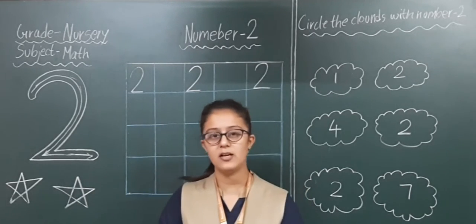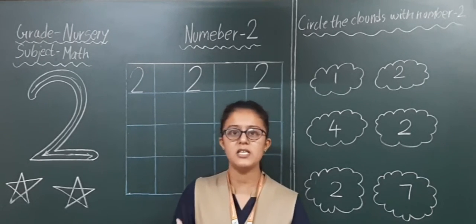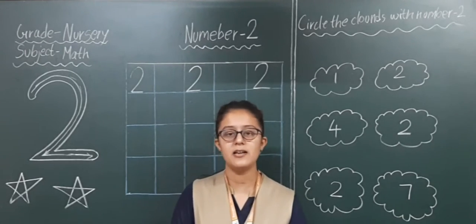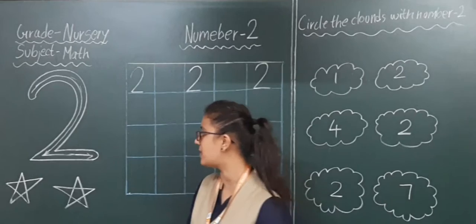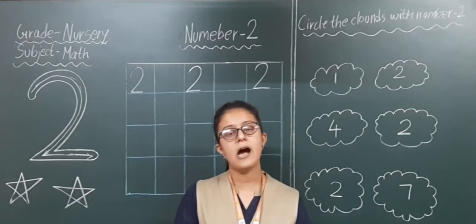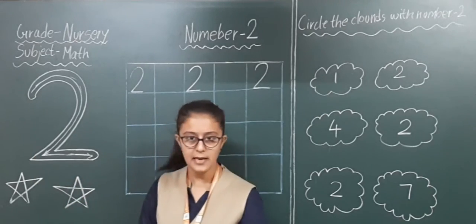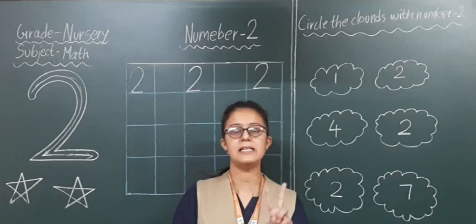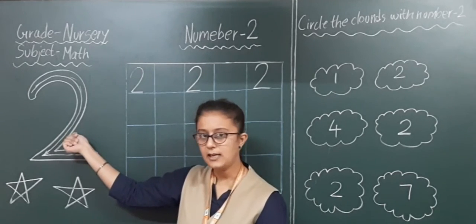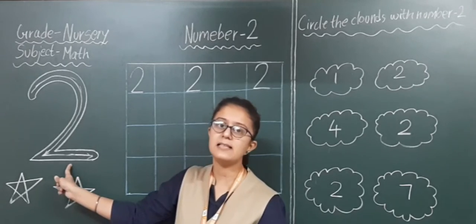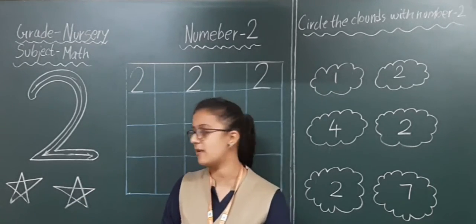In previous videos we have learnt the numbers of term 1. So you all have understood how to write the numbers. Now we are moving forward to the next number, that is number 2. How to write number 2? First of all we have to make one curve line and then one sleeping line. We are using 2 patterns in number 2: the first pattern is a curve line, and the second pattern is a sleeping line. We have to connect both patterns to get number 2.